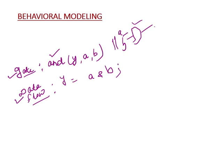In gate level modeling, the designer knows how the input data flows from input to output, because the designer knows whether this is an AND gate, OR gate, or NAND gate. The designer is fully aware of the data flow, and instantiating a primitive works exactly like that.